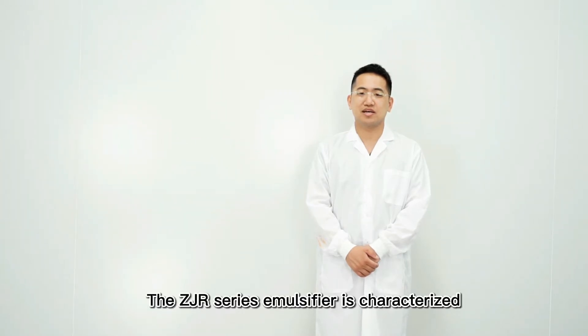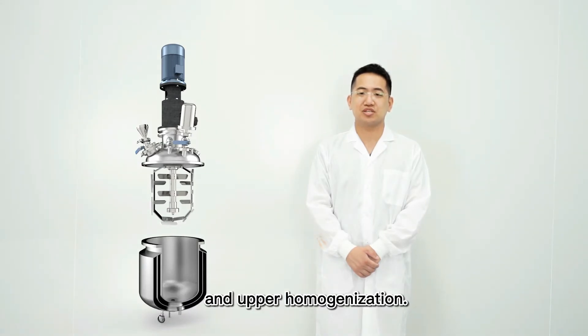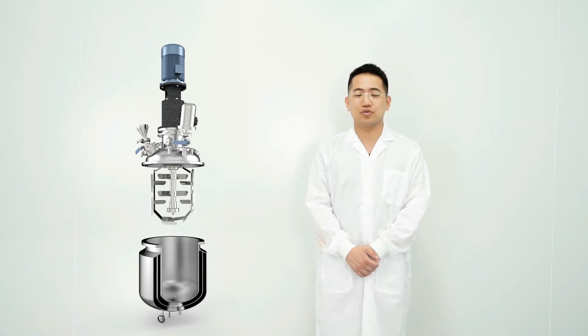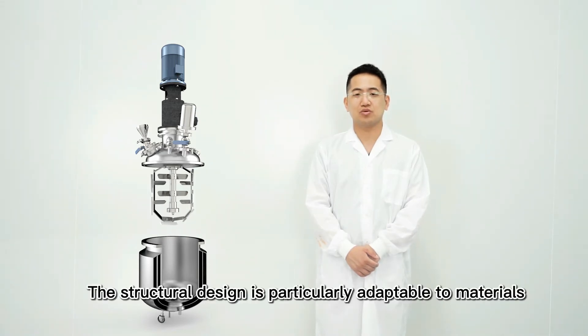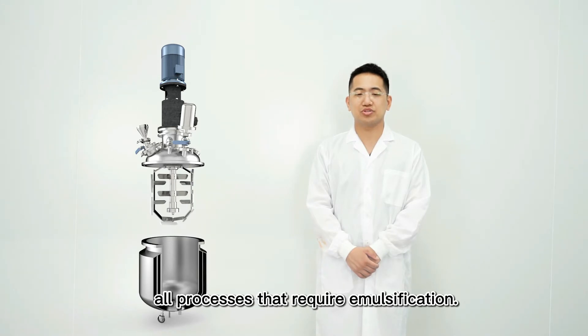The ZJR series emulsifier is characterized by a structure that combines counter-rotating wall mounted stirring and upper homogenization. The structural design is particularly adaptable to materials. It can be used in almost all processes that require emulsification.